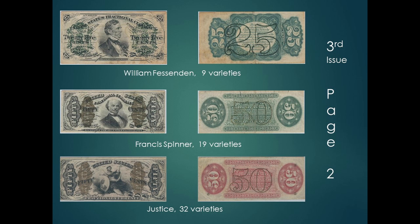Spinner was also the first government official to hire women. Initially that was because they could not be drafted, but he continued after the war's end. This is a good time to discuss varieties, which really proliferate in the third issue. Varieties are due to many reasons: whether the note has perforated edges or not, red or green backs, block plate number or not, surcharge mark or not, and so on. Some of the third issue notes were hand-signed by Spinner, such as the justice note shown.